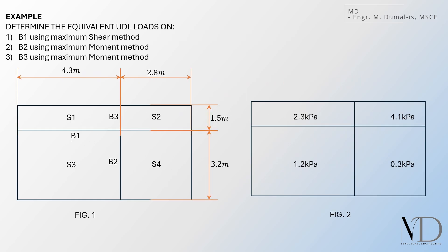Let's move on to an example to put these methods into practice. We'll determine the equivalent UDL loads for beams B1, B2, and B3 using the different methods we've discussed. We'll use the maximum shear method for B1, the maximum moment method for B2, and again, the maximum moment method for B3. Let's break it down step by step.